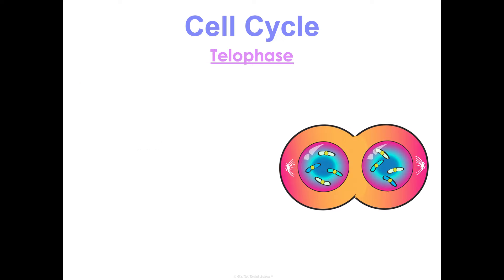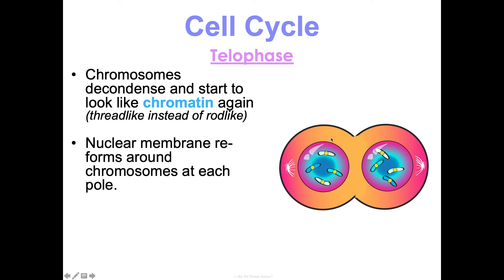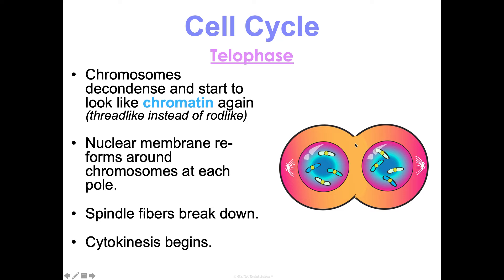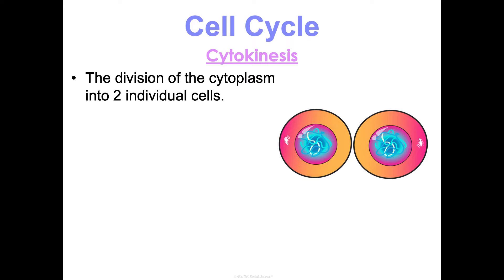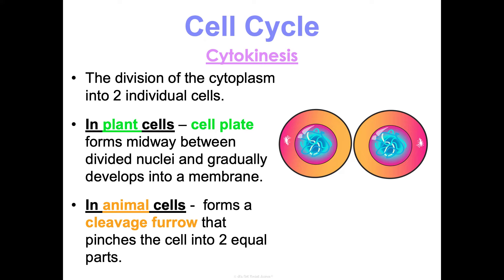Telophase is the exact opposite of prophase — everything that happened in prophase, we do the opposite. Chromosomes decondense and start to look like chromatin again — thread-like or spaghetti-like rather than rod-like. The nuclear membrane reforms around the chromosomes at each pole of the cell, and spindle fibers break down. Then cytokinesis begins — in plant cells, a cell plate forms and develops into a membrane that splits; in animal cells, a cleavage furrow pinches and separates into two equal parts. The end result is two identical body cells, both with all of your DNA.